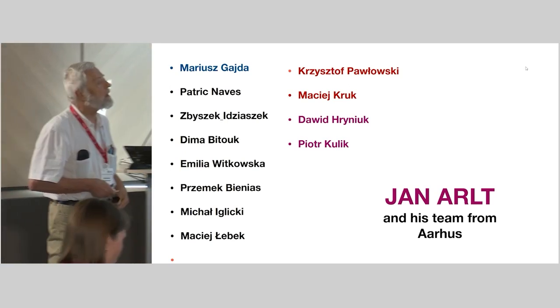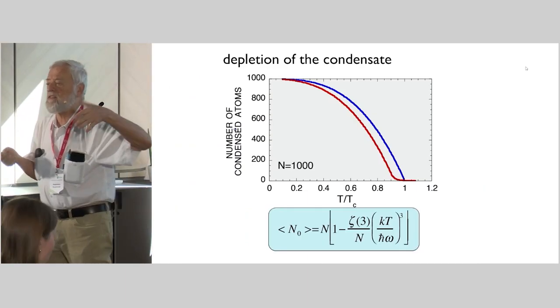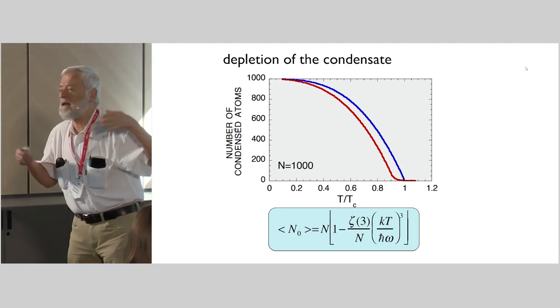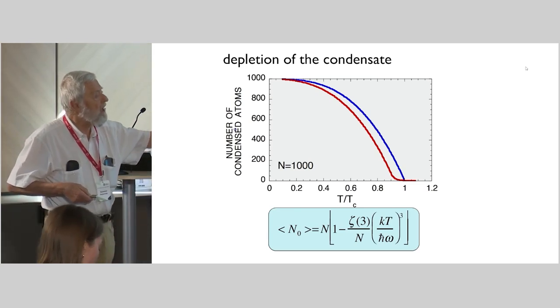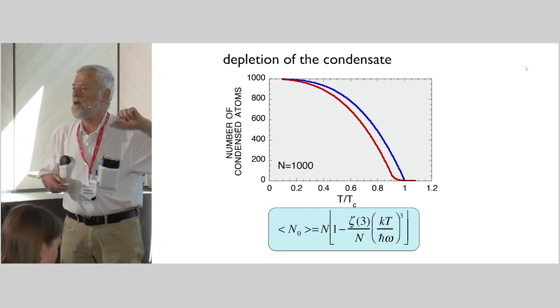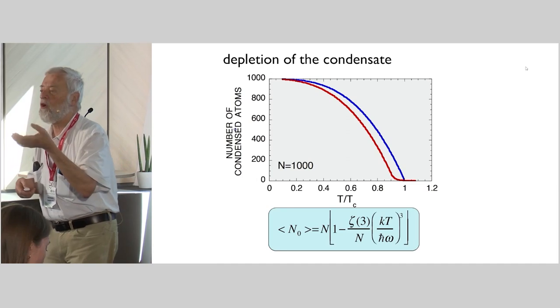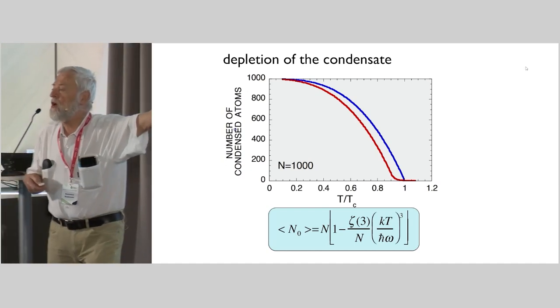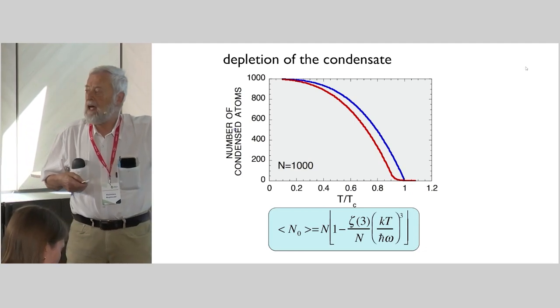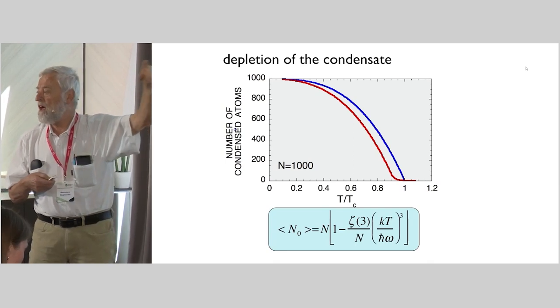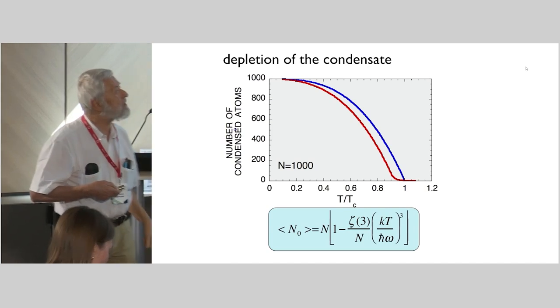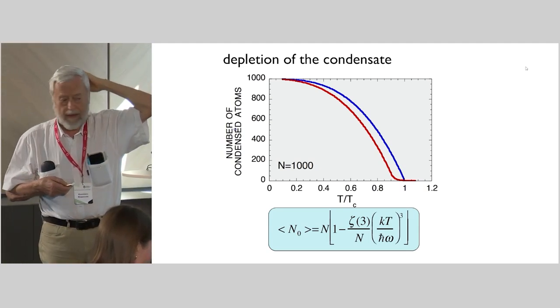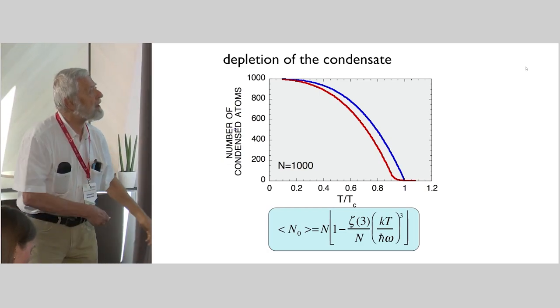When you think of just depletion of a condensate with temperature growing from zero to critical and then nothing interesting or surprising comes out, the well-known formula with the celebrated Riemann zeta functions is known to all students these days. One can think maybe about a complication - if the number of atoms is finite, then of course there cannot be a non-analytic phase transition. There's always a smooth curve, and it's of course a little bit shifted like this red one. I'm talking here about ideal gas of one thousand atoms in the spherically symmetric harmonic trap.